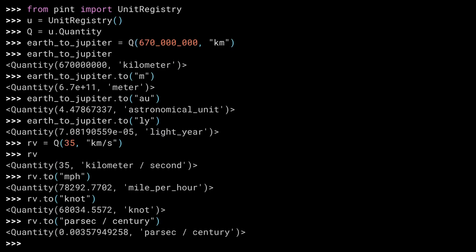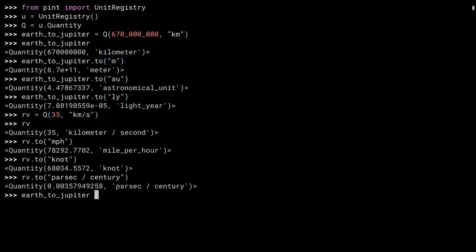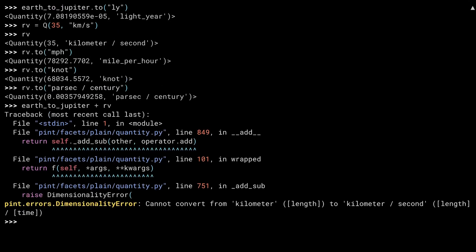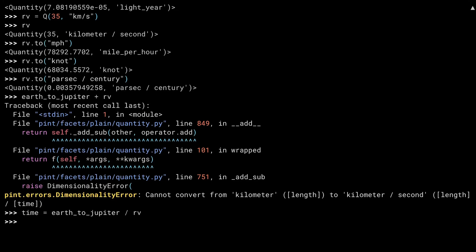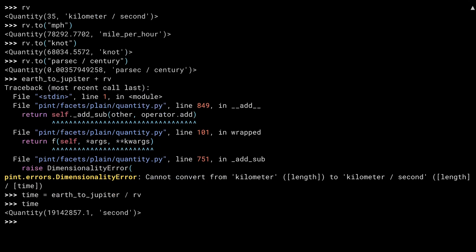One of the great things about Pint is that it doesn't let you do things you're not supposed to. Distance values and velocity values shouldn't be added together. If you try to do so, Pint throws a dimensionality error. That doesn't mean you can't do math, though. If you want to know how long it would take for your rocket to make it to Jupiter, you divide the distance by the velocity. Just over 19 million seconds.